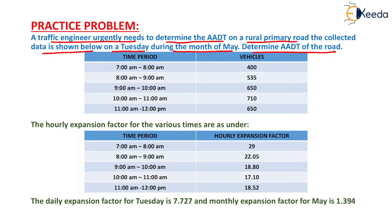In this table, the time period and vehicle counts are shown. From 7 am to 8 am, the number of vehicles is 400; from 8 am to 9 am it is 535; from 9 am to 10 am it is 650; from 10 am to 11 am it is 710; and from 11 am to 12 pm the number of vehicles is 650.